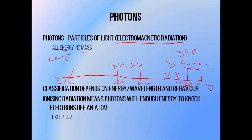This damage occurs via ionization, so it's a property of photons with a high enough energy to knock electrons off atoms. Lower energy varieties of radiation, like microwaves and visible light, can also cause damage, but this is via heating and not ionization, so you don't have to worry about getting cancer from your mobile phone or from standing too close to your microwave.